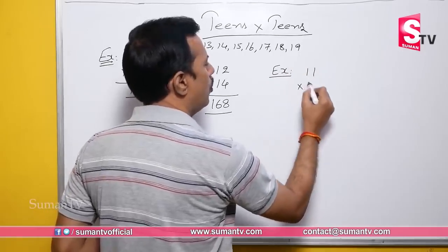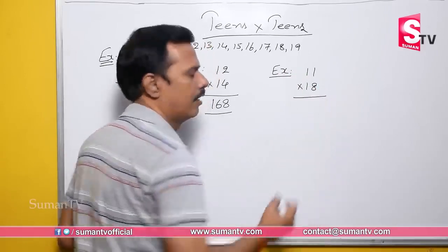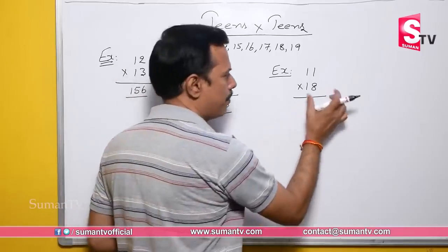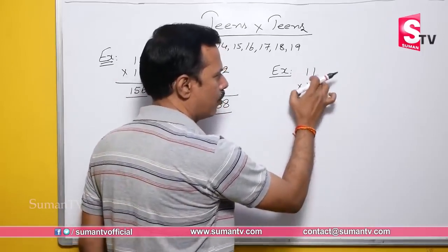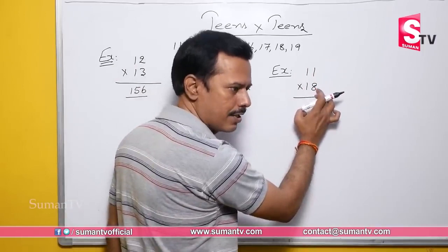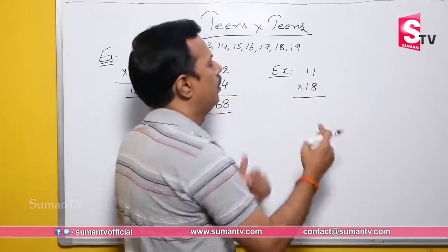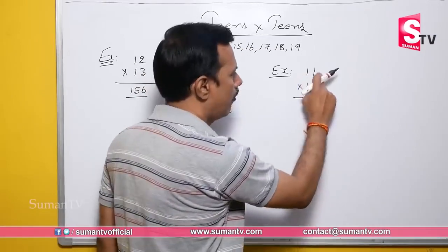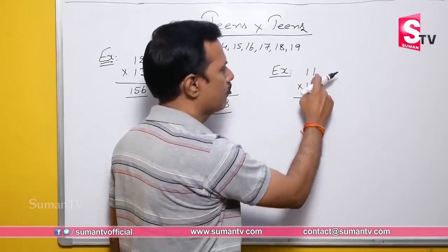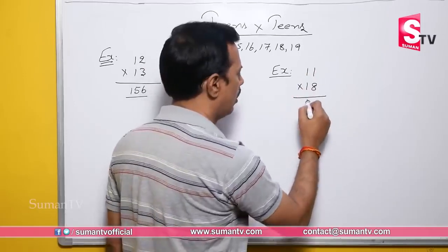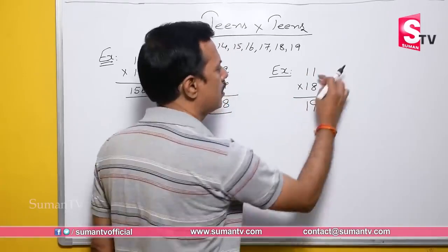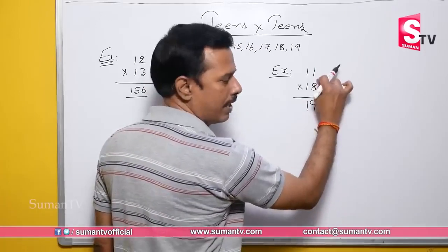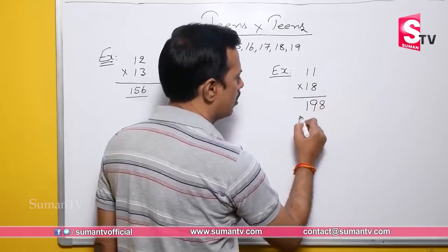Next example: 11 into 18. Same process — add the unit digit of one number to the other: 11 plus 8 equals 19, or 18 plus 1 also equals 19. Then for the second part, right side unit space: multiply 1 × 8 = 8. So 11 into 18 is 198.